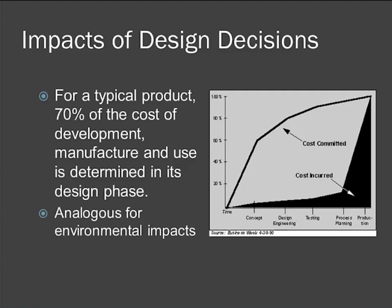A figure common in engineering design processes shows: on the x-axis, a design timeline from concept to testing and finally into production; on the y-axis, percentage. What you see is that in the design phase you commit 70% of the cost, although you won't actually incur those costs until you go into process planning and production. The same thing is true for environmental impacts — as soon as we design the system, whether it's the feedstocks or the process, we're also designing the waste stream and the energy demand. By getting involved in the design phase, we have the most potential to affect the outcome long before we go into production.